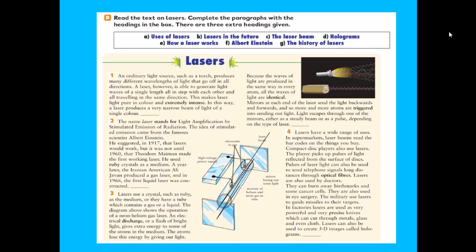Number 1: An ordinary light source such as a torch produces many different wavelengths of light that go off in all directions. A laser however is able to generate light waves of a single wavelength or lens tip, with each other and all traveling in the same direction. This makes laser light pure in color and extremely intense. In this way a laser produces a very narrow beam of light of single color.